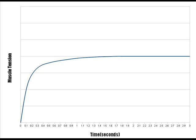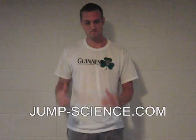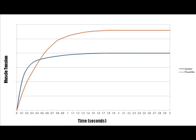For most sports movements, all that matters is the first quarter second of the curve. The goal of strength training and explosive training is to raise that small section. Moving lighter loads at a higher velocity produces a higher rate of force development but less strength. Moving heavier loads produces more strength but a lower rate of force development. So if this is a sprinter, this is a power lifter — the power lifter has higher maximum tension and strength, but the sprinter produces more force in the first part of the curve.